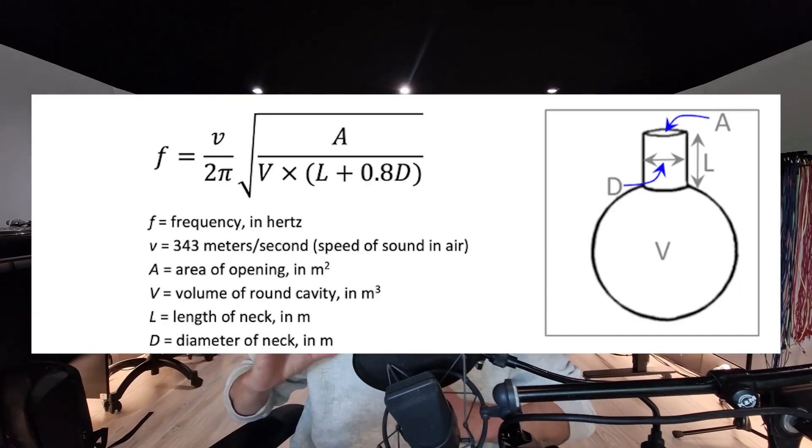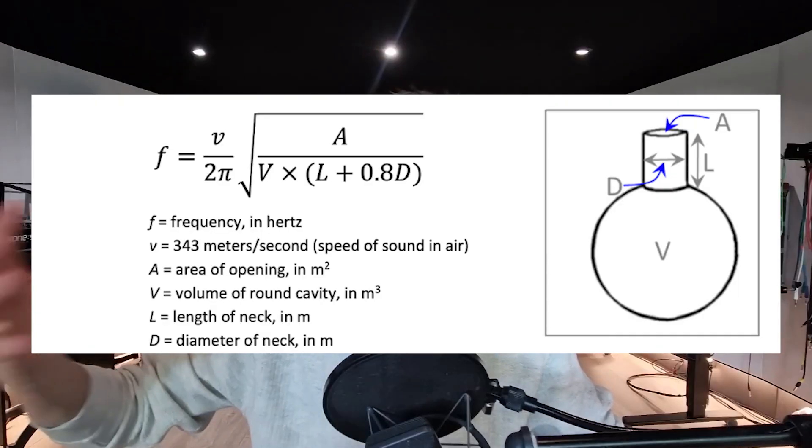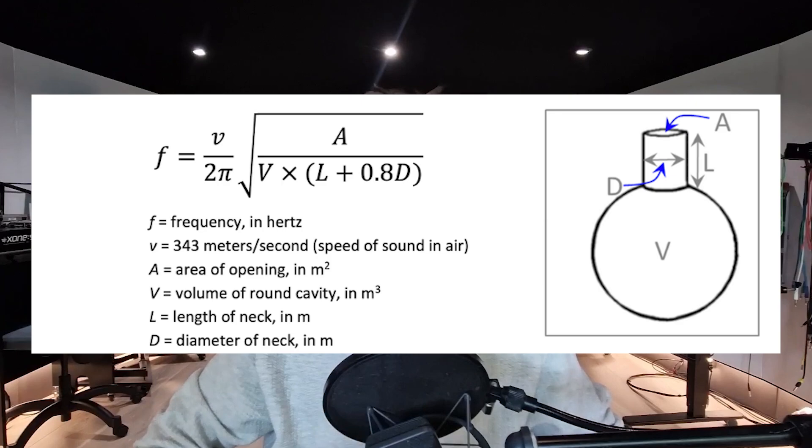Same goes for Helmholtz resonators. The principle of a Helmholtz is like a bottle of beer — you blow into a bottle, it creates a sound. Well, if the bottle is tuned to the mode of your room, it will absorb that energy. I will put some links in the description to calculators so you can do it yourself. But please bear in mind that these are not so easy to build as a classical rockwool broadband absorbent. I have friends who tried this and had to start again a few times before getting it exactly right.